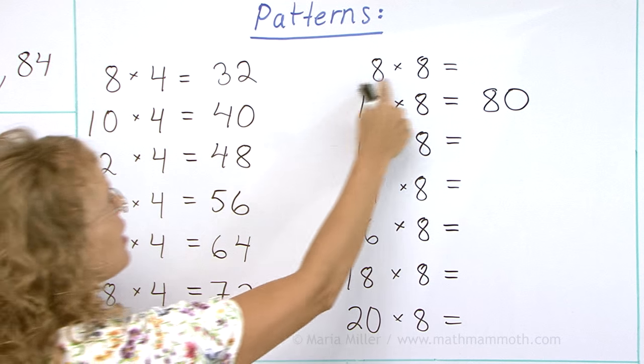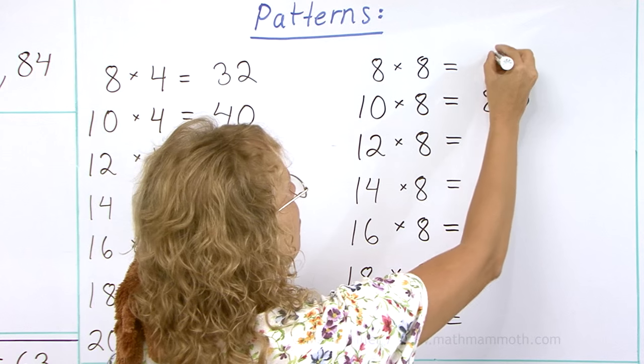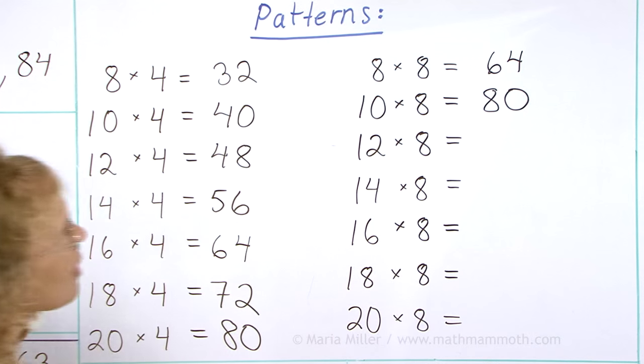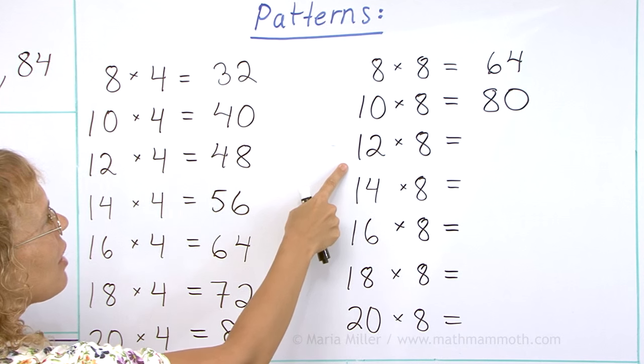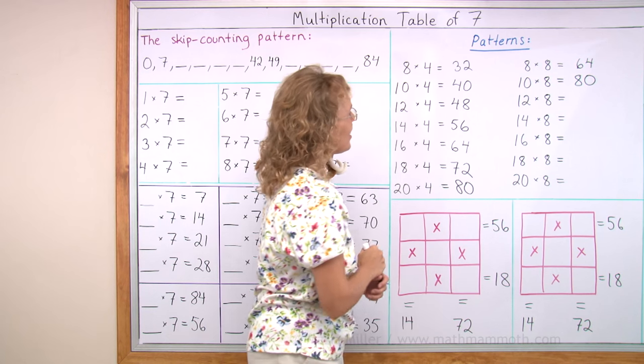So 8 times 4, 32. Eight times eight will be double this number. It will be 64. And 12 times eight will be 12 times four and double that. 48 and double that.